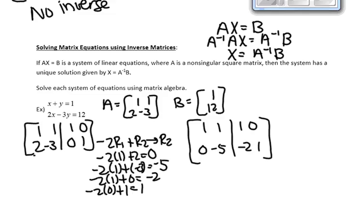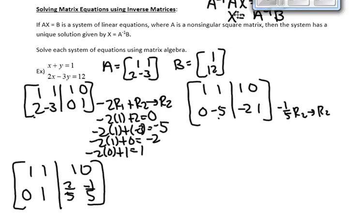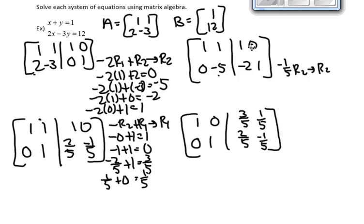Doing the row operations, we get these particular values in row 2. Now I need to get rid of this negative 5 and make that a 1, so I'm going to take the second row and multiply by negative 1/5. Doing that row operation, I have my new row 2. The last part is to take the opposite of row 2 and add it to row 1 as my new row 1, because I need to get rid of this 1 and make that a 0. Doing the row operation, I have my new first row, which means A inverse is equal to this.